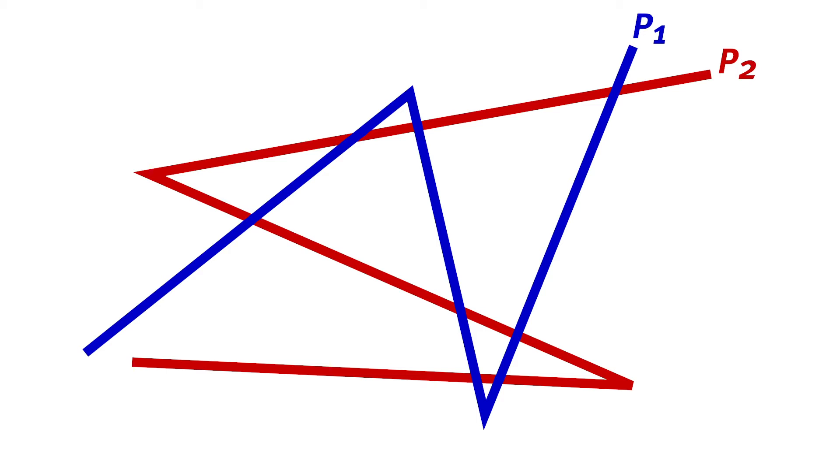So along the polyline P1 we can look at these points P1, Q1, and R1. And then for each of them let's see where the minimum is realized on the distance to the polyline P2.